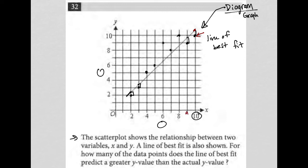When we look at nine, for instance, the line of best fit says our point should be here on the line, but the actual data point is there. So we have one, two, three, four points that fit exactly what this question is asking for, where the line of best fit predicts a greater y value than the actual y value, and therefore four is the correct answer to this question.